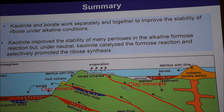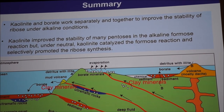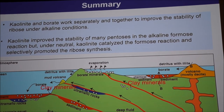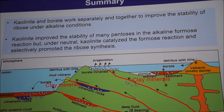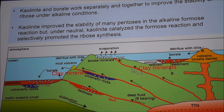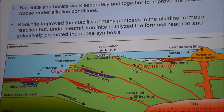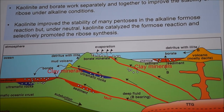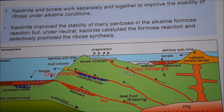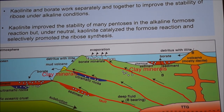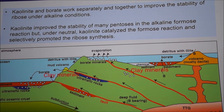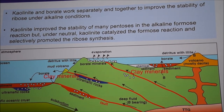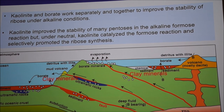In summary, kaolinite and borate work separately and together to improve the stability of ribose under alkaline conditions. Kaolinite also improves the stability of many pentoses in the alkaline formose reaction. Under neutral conditions, kaolinite catalyzes the formose reaction and selectively promotes ribose synthesis.